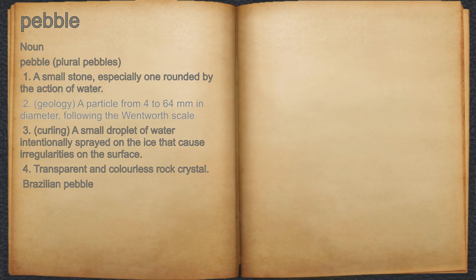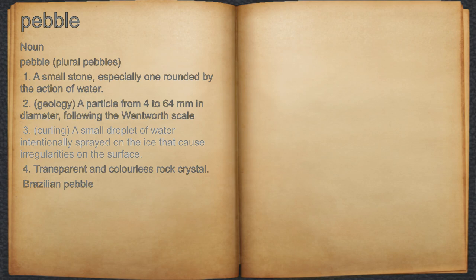2. Geology: a particle from 4 to 64 millimeters in diameter, following the Wentworth scale. 3. Curling: a small droplet of water intentionally sprayed on the ice that causes irregularities on the surface.